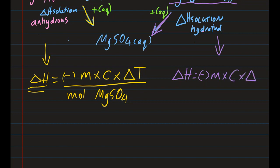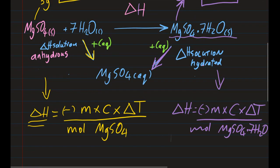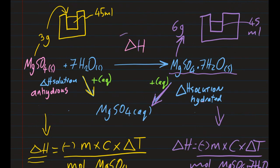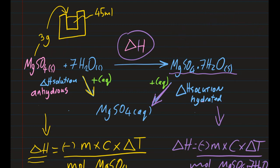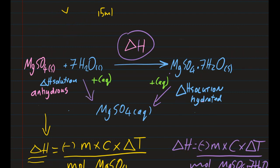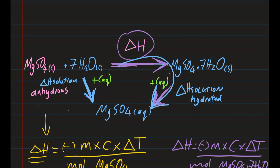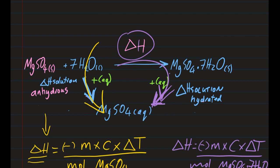Delta H equals negative: the mass of what's heated — six grams of heptahydrate plus 45 grams of water — times specific heat capacity, times temperature change, divided by the moles of heptahydrate. Once you have those two values, you apply Hess's Law: the arrows going clockwise equal the arrows going anti-clockwise. So this arrow plus that arrow equals the third arrow.